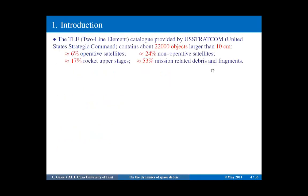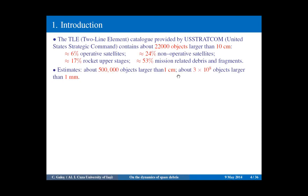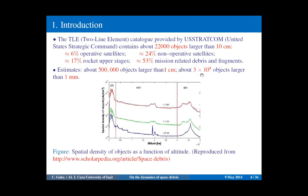Following a two-line element catalog, more than 22,000 objects larger than 10 centimeters are orbiting around the Earth, but just 6% of them are operative satellites. The number of objects increases exponentially. If we count smaller objects down to one centimeter, we have half a million, and down to one millimeter, we have a very huge number of fragments.